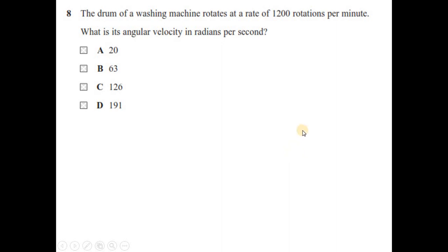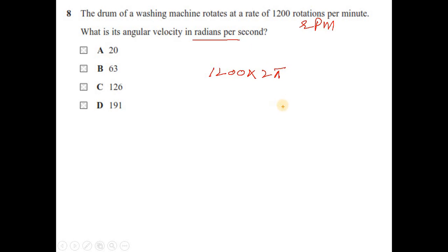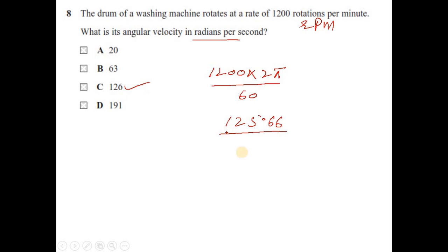Question 8: the drum of a washing machine rotates at 1200 rpm. To convert to radians per second, multiply by 2π (radians per revolution) and divide by 60 (seconds per minute): 1200 × 2π / 60 = 125.66, which rounds to 126 rad/s. The answer is option C.